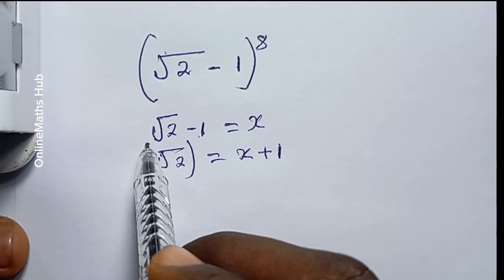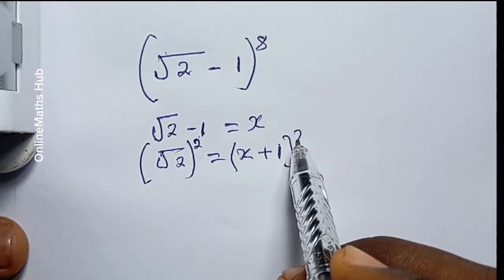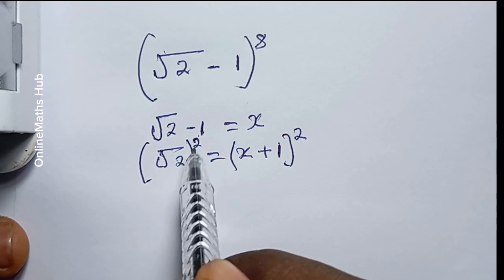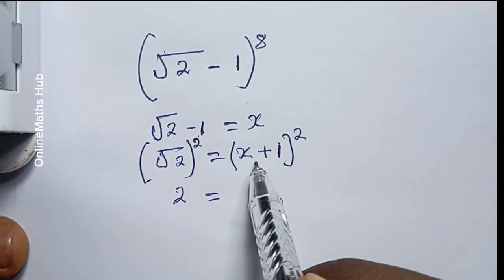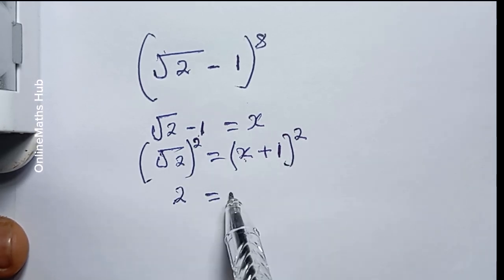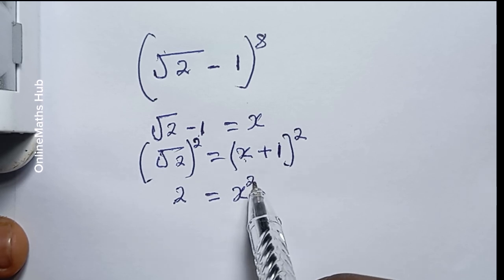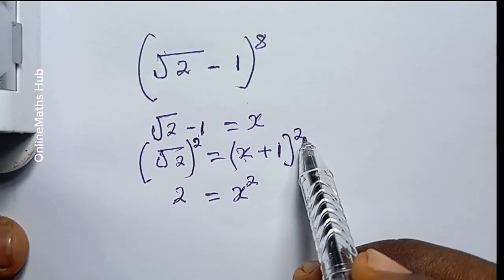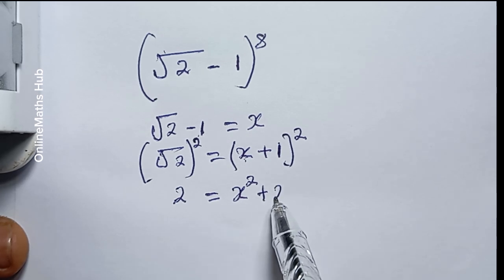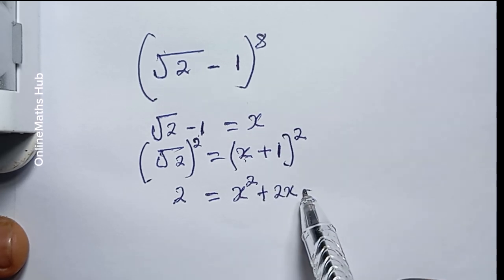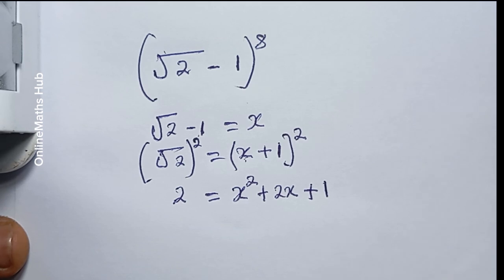Then at this point I will take the square of both sides so that I can remove the square root sign. This gives me 2, and to simplify this bracket I will use x multiplied by itself first — that is x squared — and then 2 times x times 1, which is plus 2x.